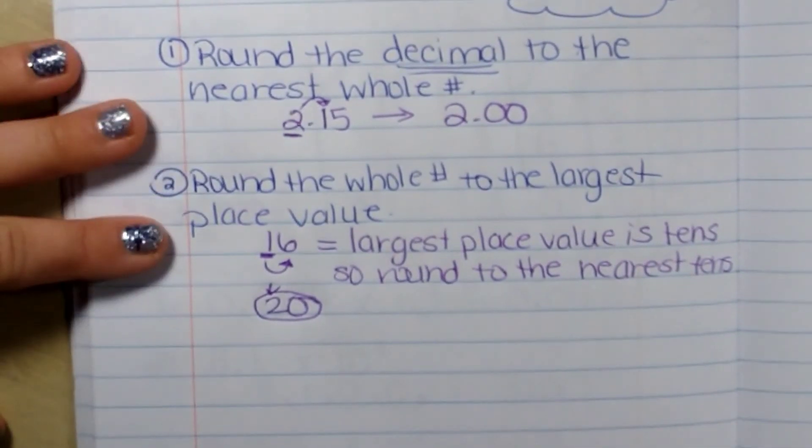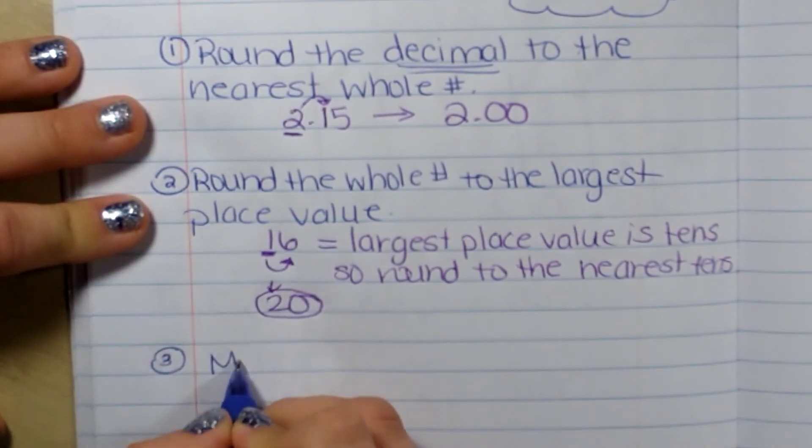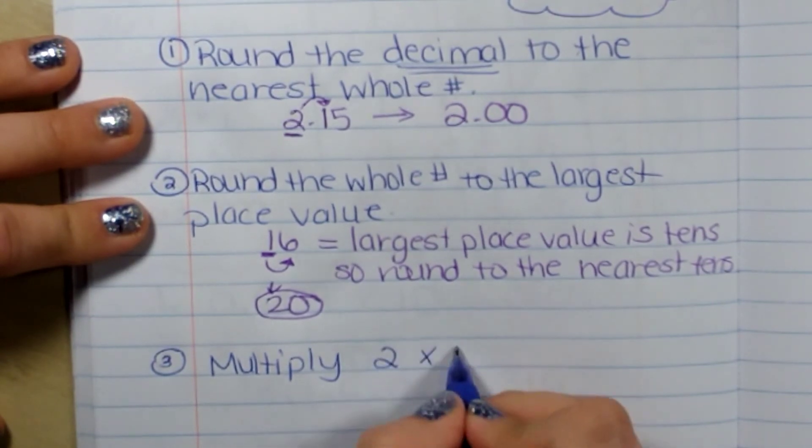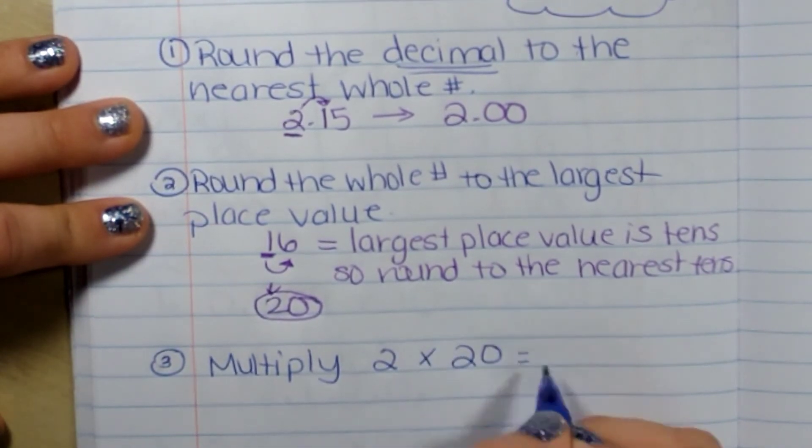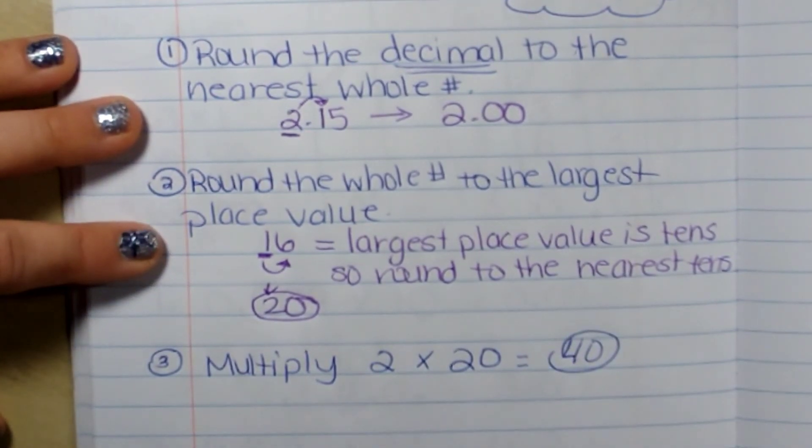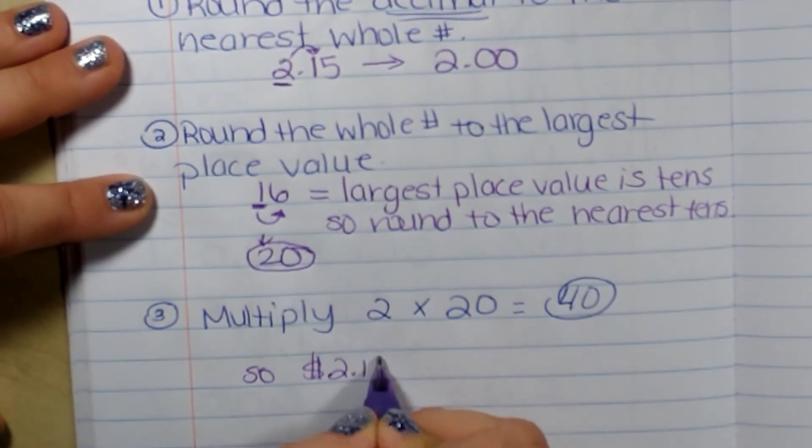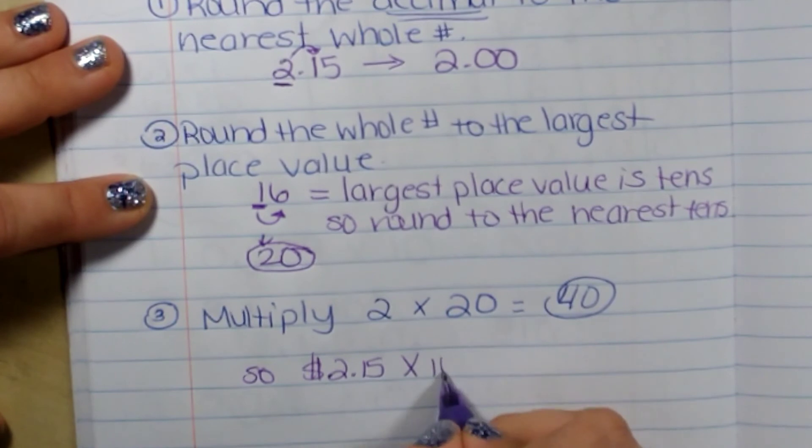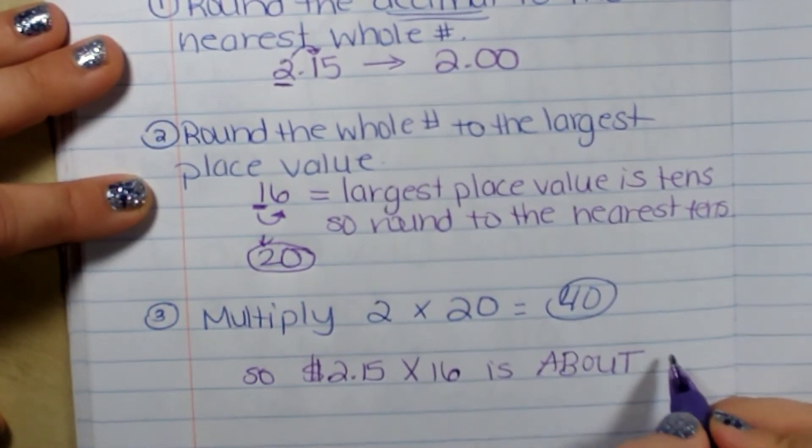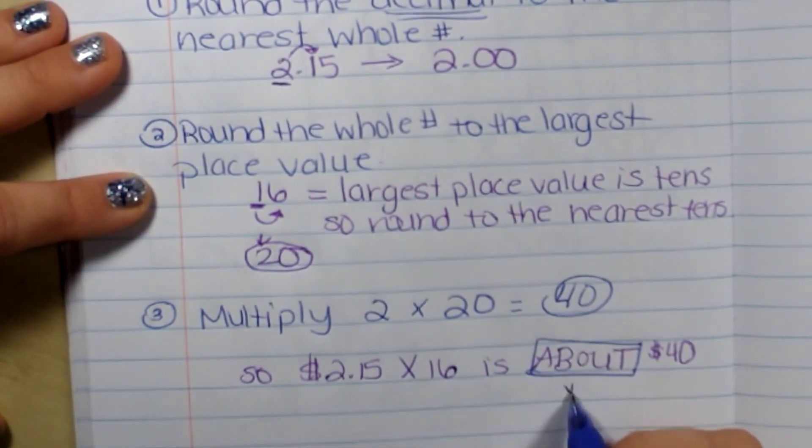So now I have two times 20, which we know is 40. So $2.15 times 16 is about $40. About means to estimate.